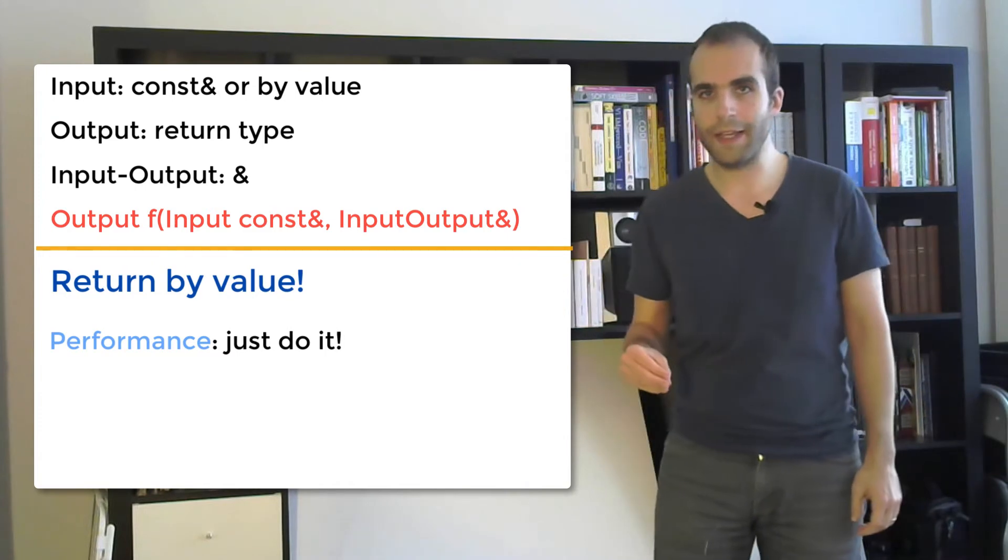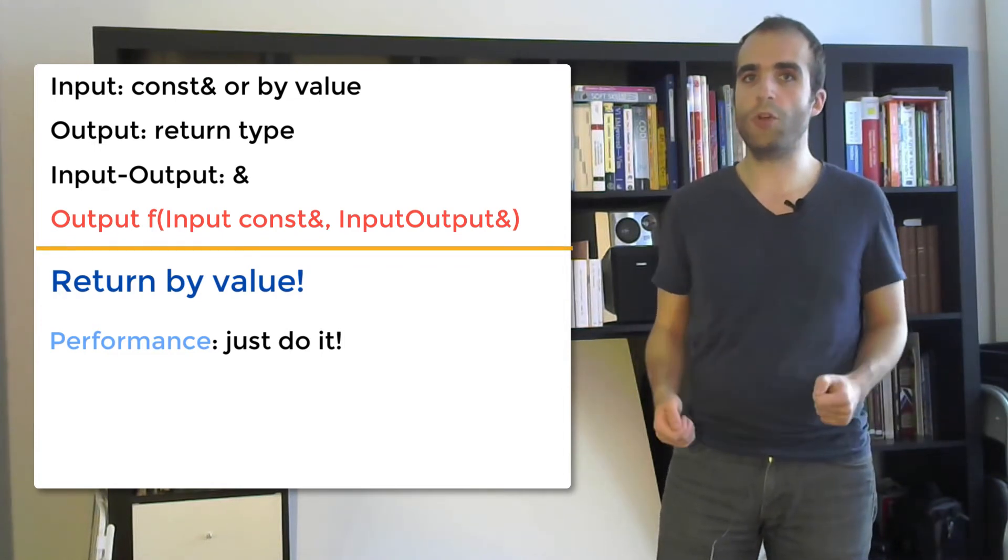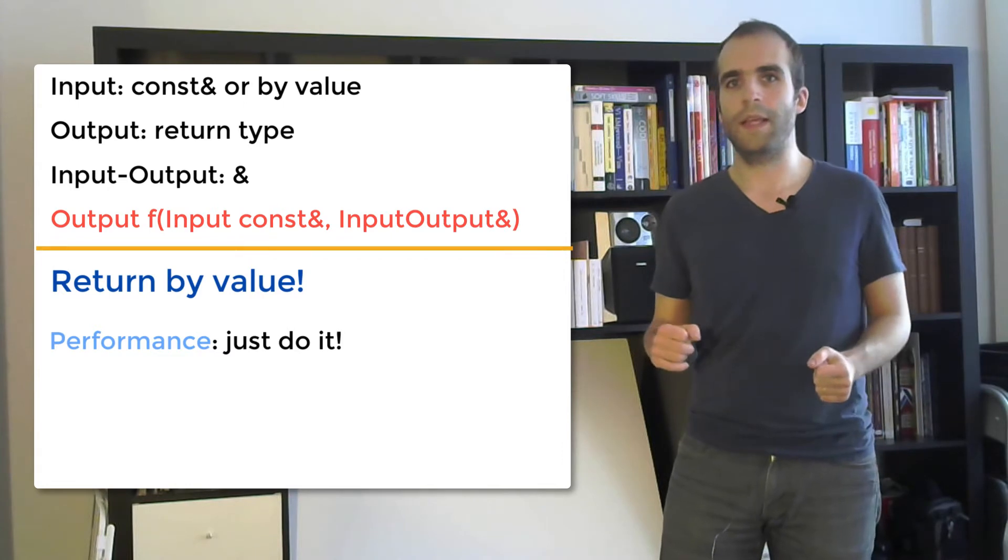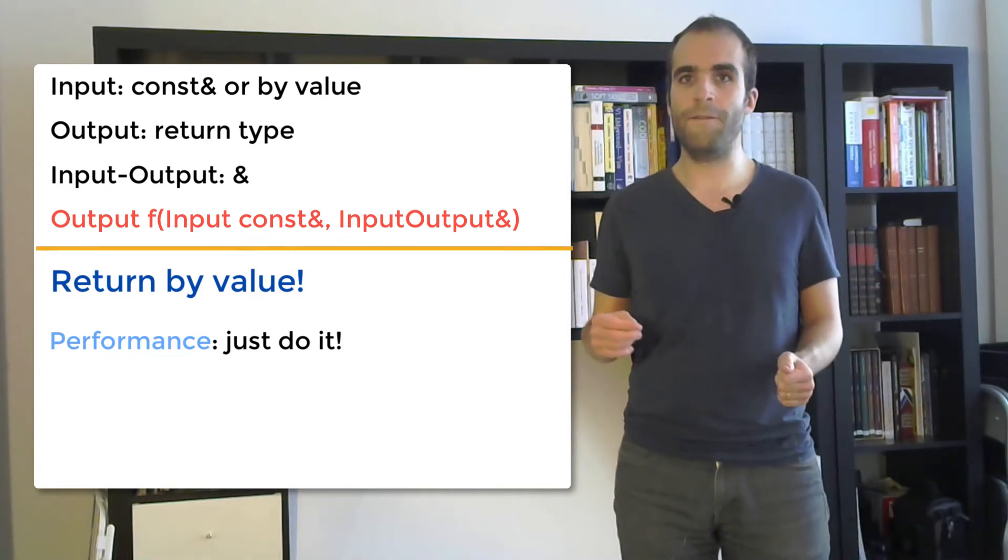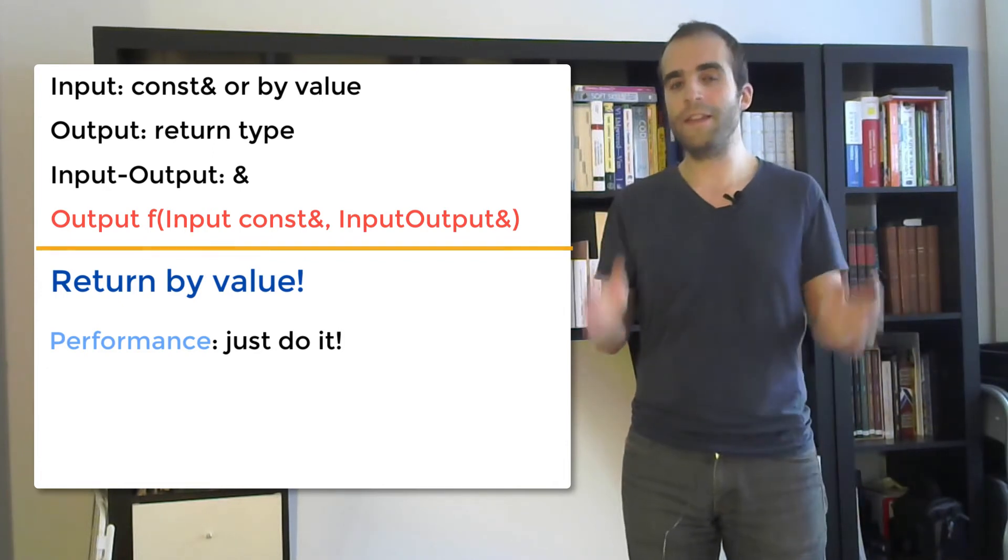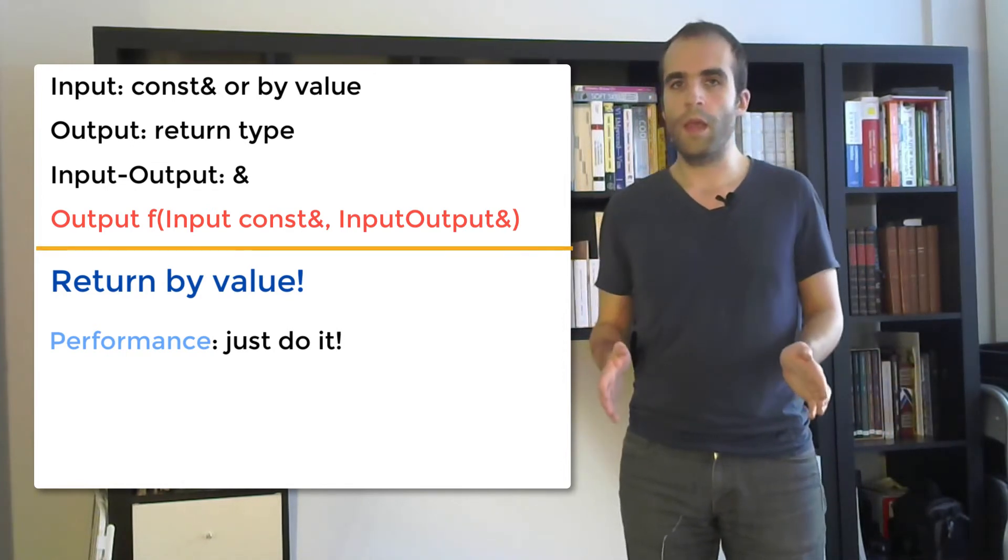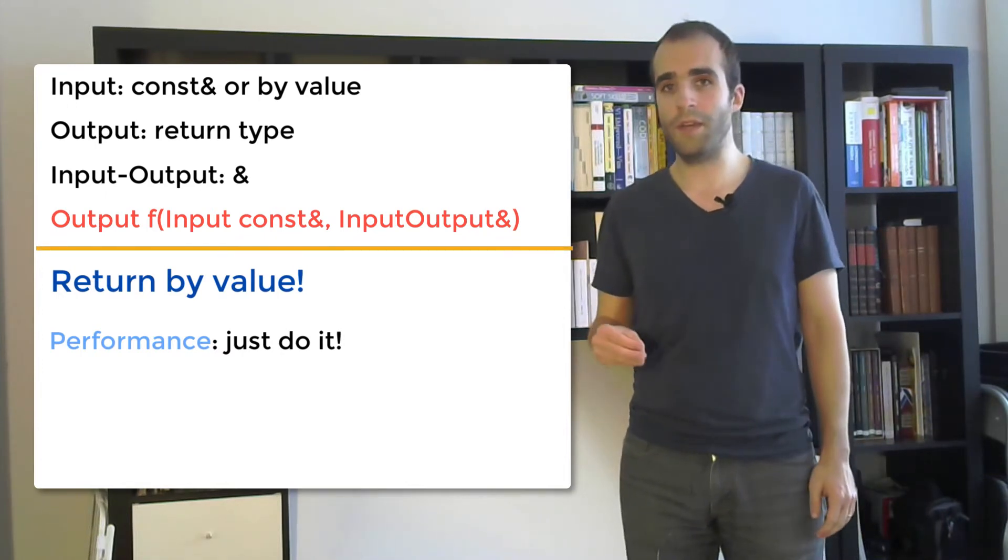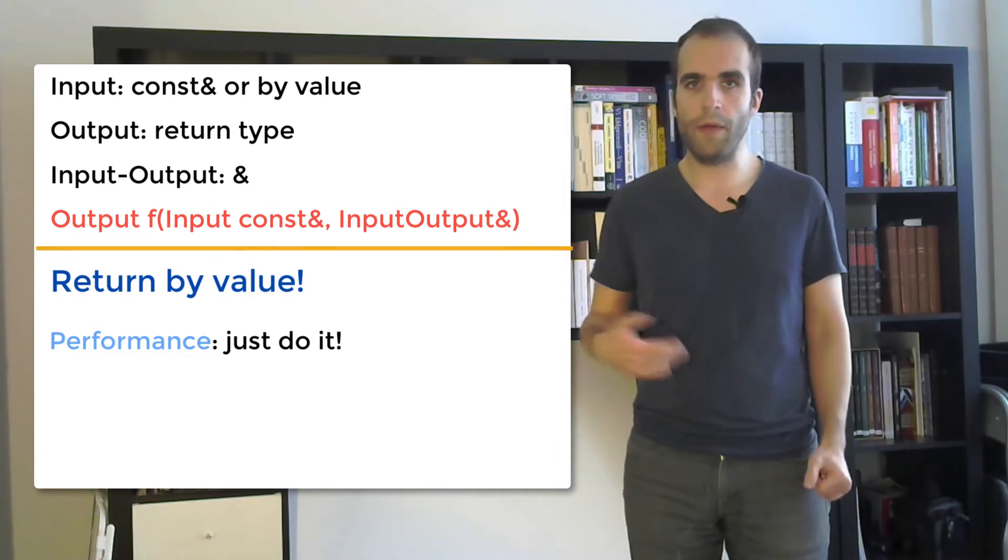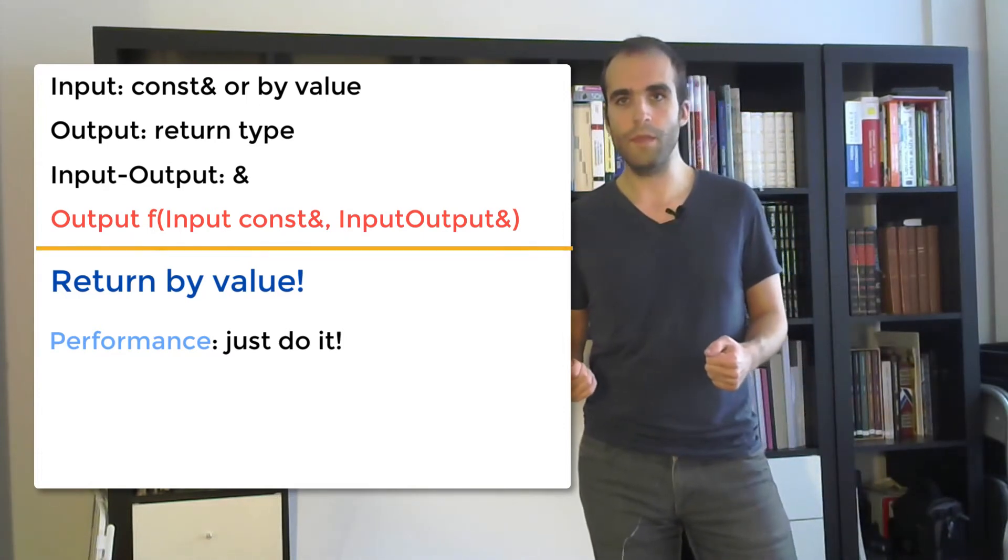Now, if in a particular case there is no RVO and there is no move semantics that applies, then yes, we're going to make a copy by returning by value. But does it matter? The only way to know whether it matters or not is to measure, to profile the code and see if there's a performance bottleneck at this particular copy constructor being called. If it's the case, then yes, we're going to revert back to another solution such as passing the output by parameter. But if it's not a bottleneck, and most of the time it isn't, it's just not likely, then why damage the code beforehand? Let's return by value first and change it only if it's necessary for performance.